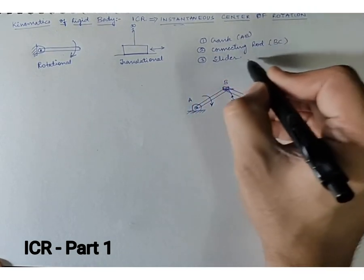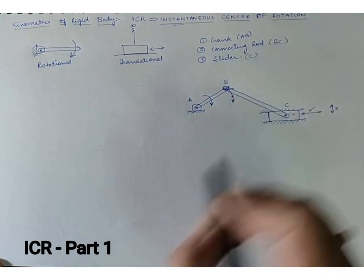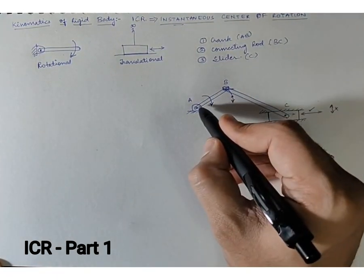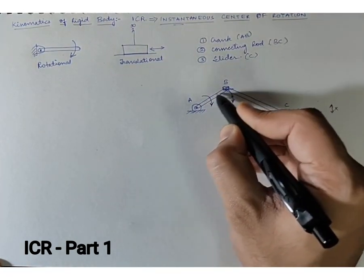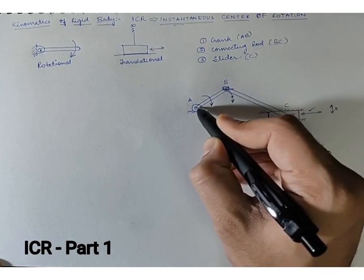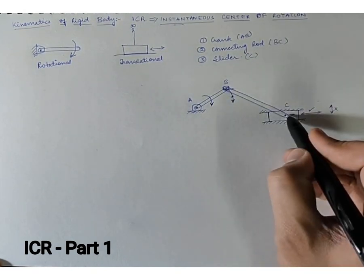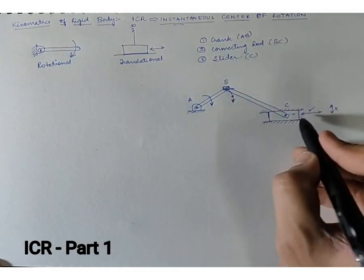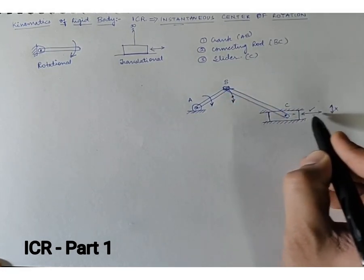So if you look at AB, AB is just a crank which will be completely rotating about point A. And C is just a slider which will simply be moving in the horizontal direction, forward or backward.